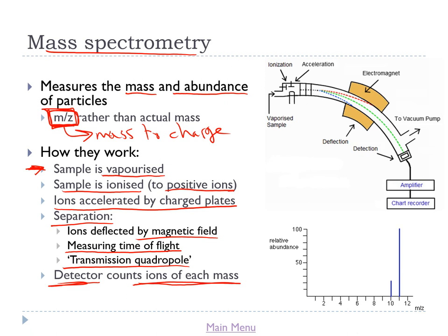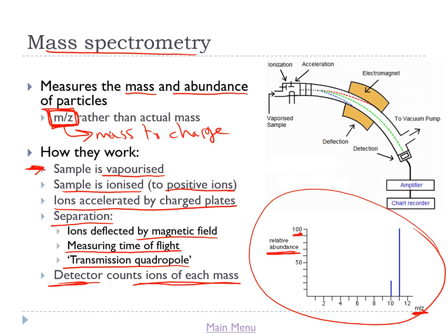From mass spectrometry we get a graph with m/z on the x-axis and relative abundance on the y-axis, typically normalised so that the highest peak is set to 100. For example, the mass spectrum of boron shows two peaks: a peak at m/z = 10 with a relative abundance of around 25, and another at m/z = 11 with a relative abundance of 100.